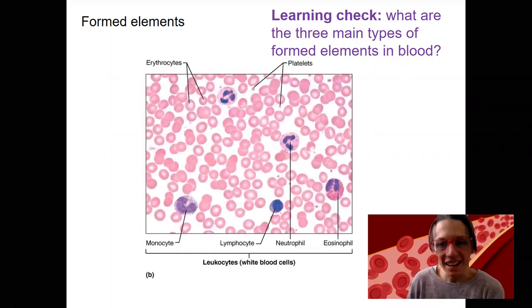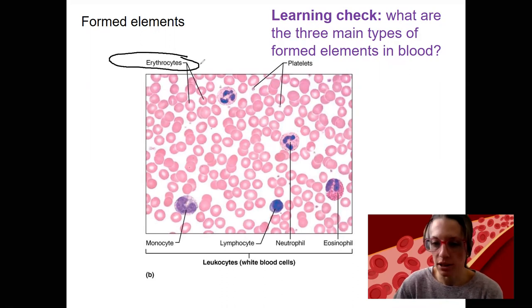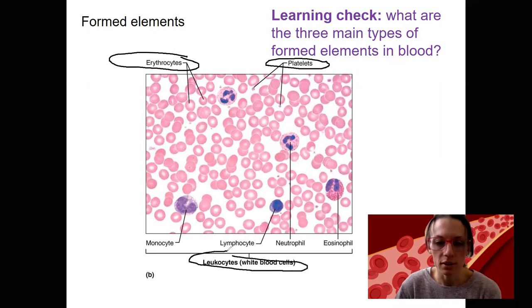I've shown here the three main types are going to be the ones that circle, so erythrocytes or red blood cells, platelets, which are not whole cells. That's why this is called formed elements, and then the leukocytes overall, so white blood cells, and here are a couple different kinds of leukocytes shown. So those are the three main types.